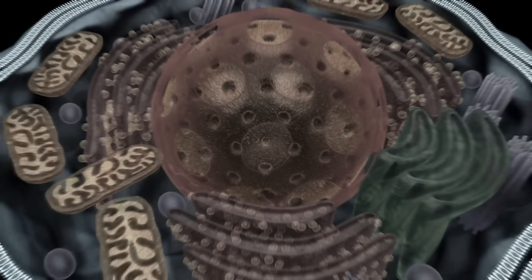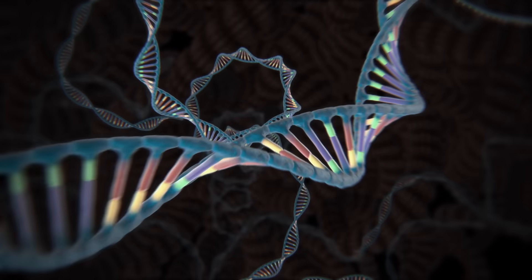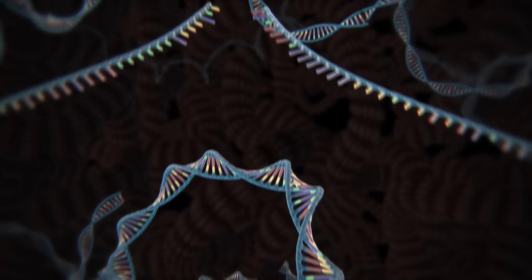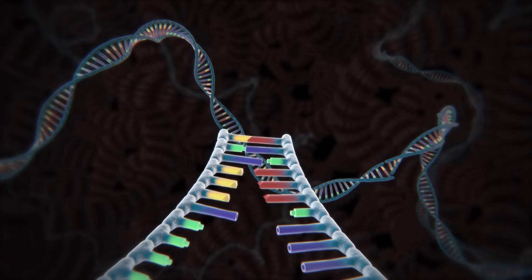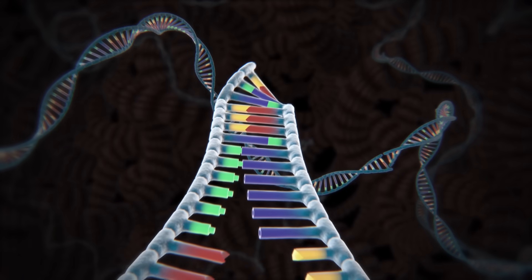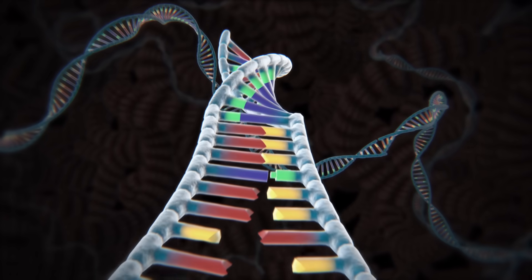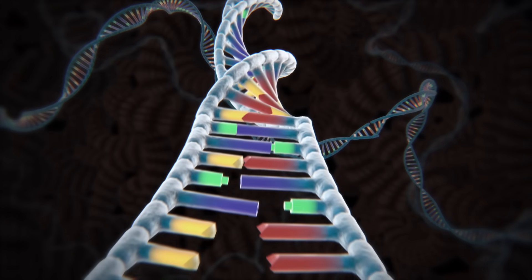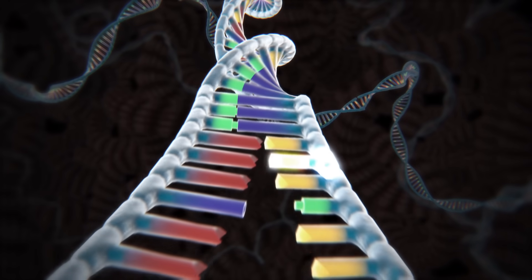Every cell in our body contains a copy of our genome, over 20,000 genes, 3 billion letters of DNA. DNA consists of two strands twisted into a double helix and held together by a simple pairing rule. A pairs with T and G pairs with C.